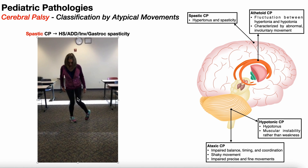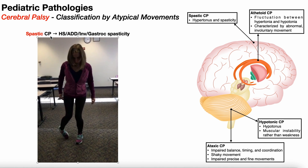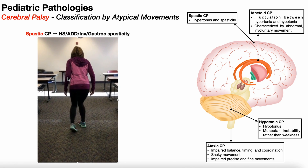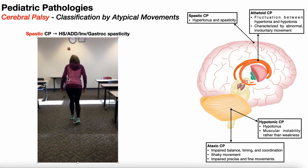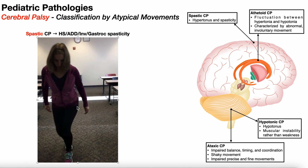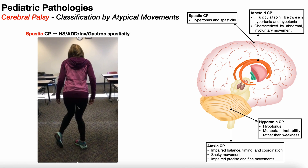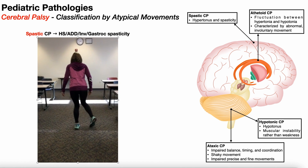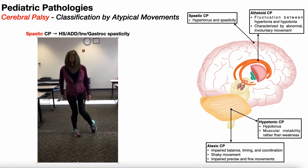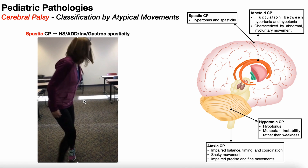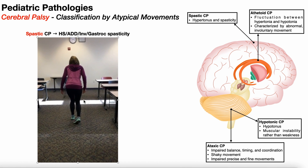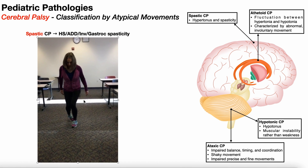Here we see the gait pattern of somebody with spastic cerebral palsy. The gait pattern won't be representative of every person with spastic CP — it depends on the number of limbs involved and the severity. In this example, at least both legs appear involved, suggesting diplegic CP. Severity is typically measured using the Gross Motor Function Measure (GMFM), with a score from one to five: one being least severe and five being most severe impairments.